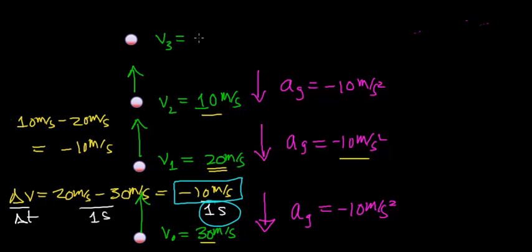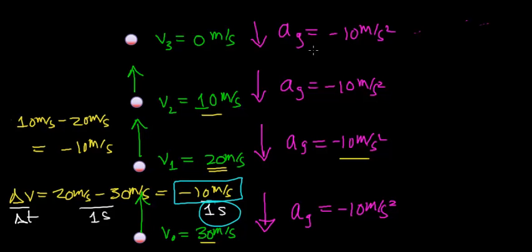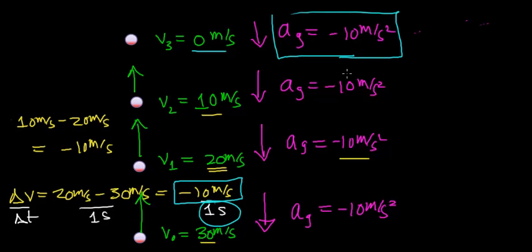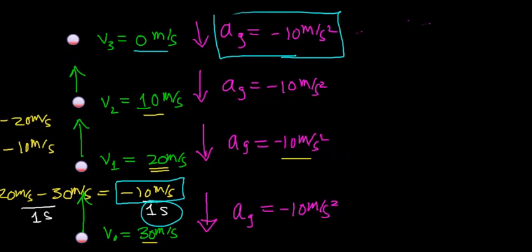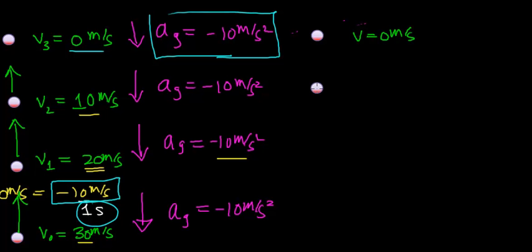After one more second — three seconds total — the velocity reaches 0 meters per second; the force of gravity has stopped the object. A common mistake is to assume the acceleration due to gravity is 0 when the ball's velocity is 0, but in fact gravity continuously accelerates the object. The force of gravity now changes the direction of the ball. After one more second — four seconds total — the velocity goes from 0 to negative 10 meters per second, indicating the ball is now moving downward.